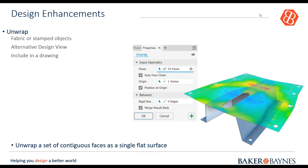Another new feature is the Unwrap feature. It unwraps a set of continuous faces into a single flat surface — similar to a flat pattern but not exactly one. It gives you a heat area showing the stretch area of the way a face is wrapped around an object. It can be applied to fabric or stamped objects, and you can include the result in your drawing and dimension it.